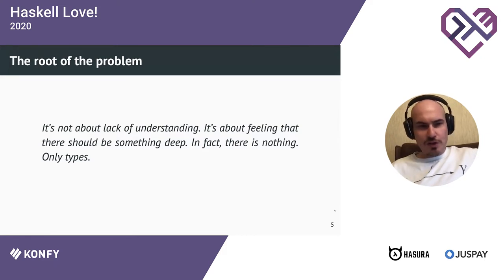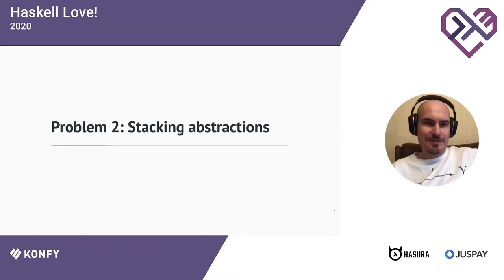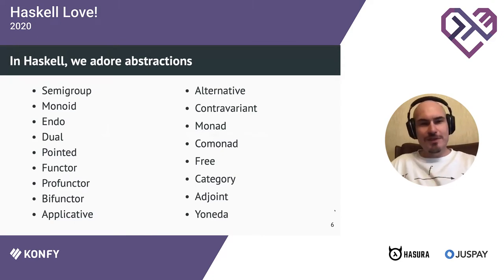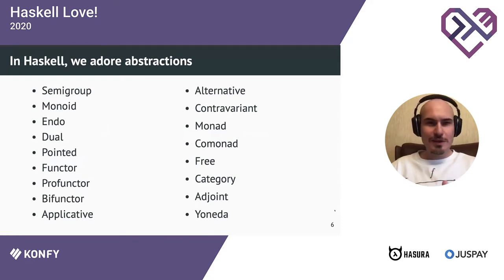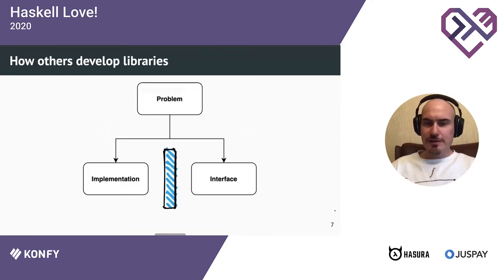The second problem is that there are many abstractions - not only monads bother Haskell users. In this slide I've tried to list some of them: comonads, free monads, profunctors, and others. We are very fond of them - we love to use comonads, free monads, profunctors. But let's think about software development. These are all good abstractions that come from mathematics with solid bases, but if we are developing libraries, we have a problem to solve.